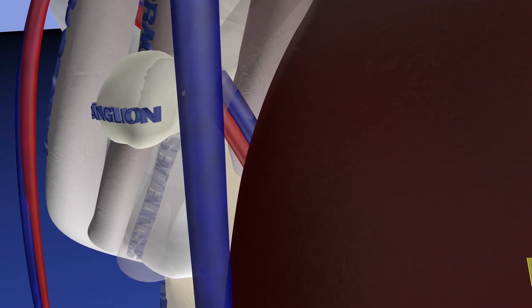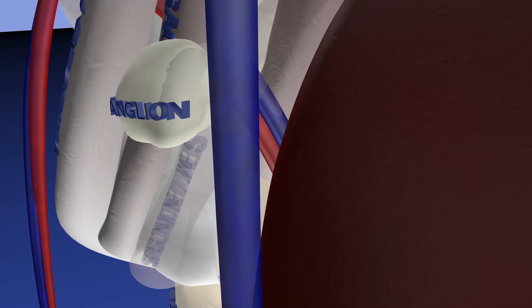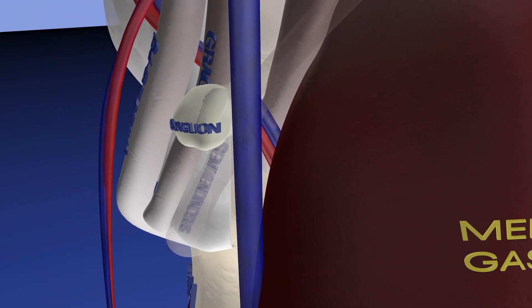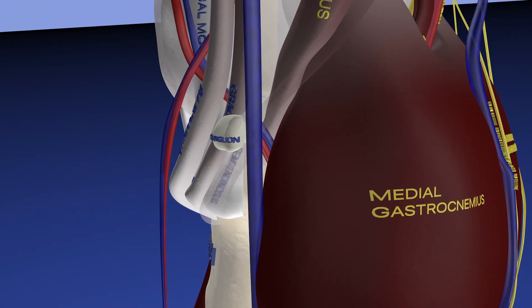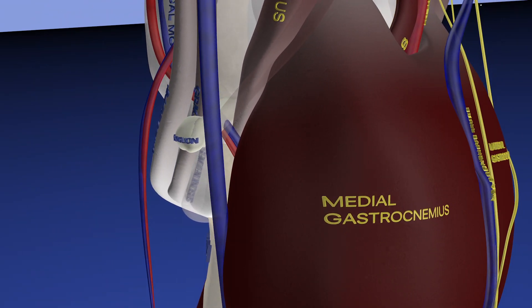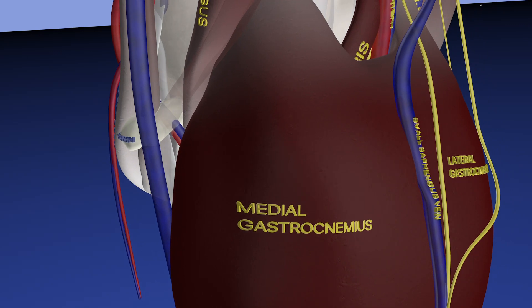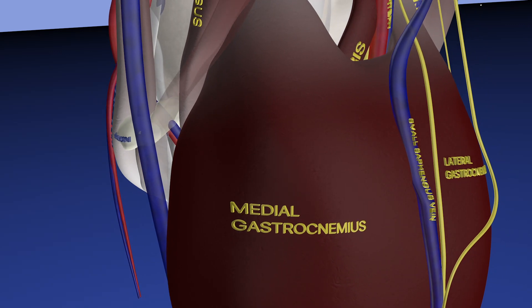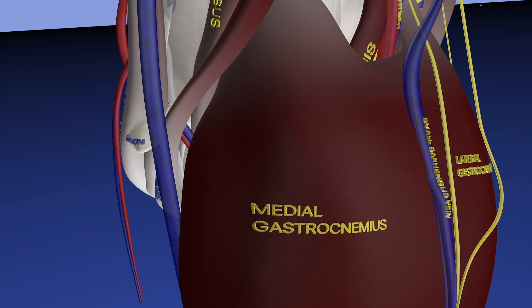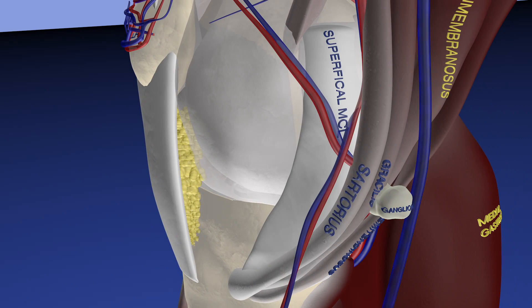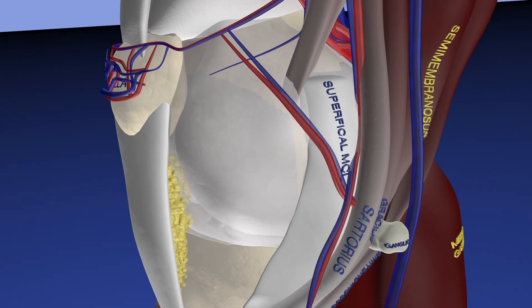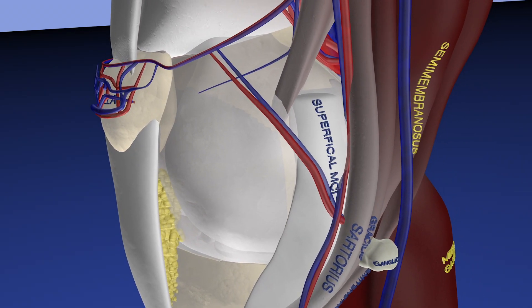Here we're just zooming in on this ganglion. We've made the semitendinosus tendon translucent and now we're rotating. We're bringing back the semitendinosus tendon, and here we can appreciate the cyst from an anteromedial perspective.